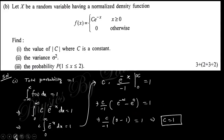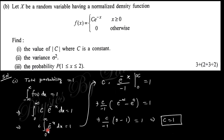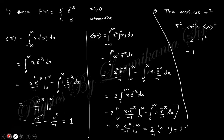The next question gives a random variable X with a normalized density function and asks to find the value of c, the variance σ², and a probability. Since it is a normalized density function, the total probability equals 1. Integrating the total function and setting it equal to 1 — the integral of e^(−x) is −e^(−x); putting in the limits, 1/e^∞ = 0 and e⁰ = 1 — you finally obtain c = 1.